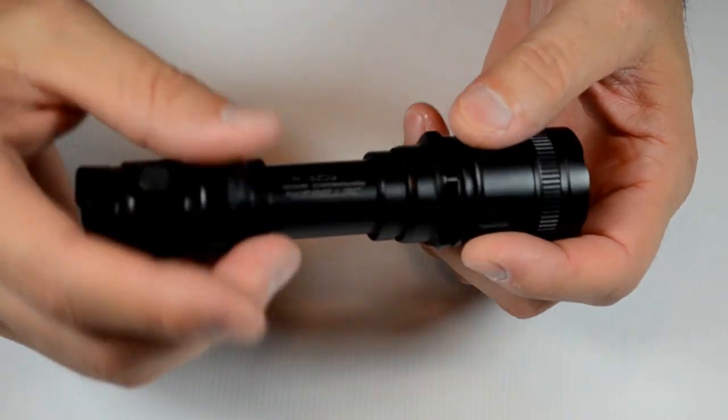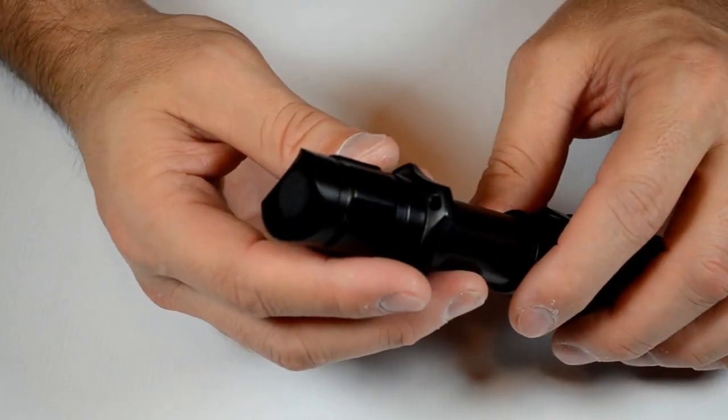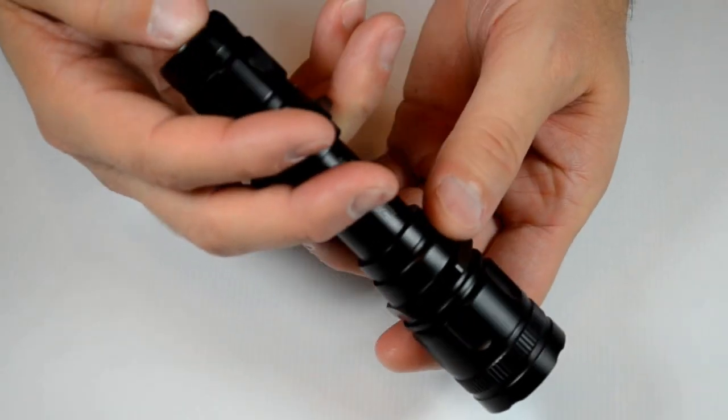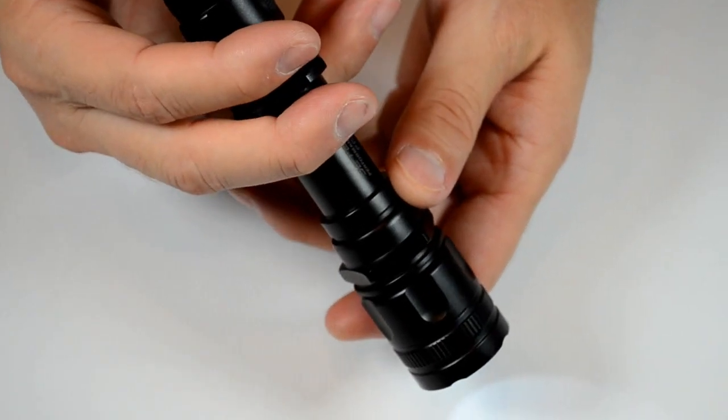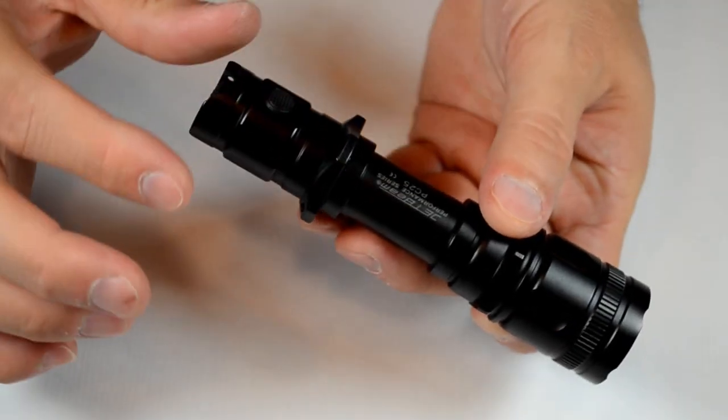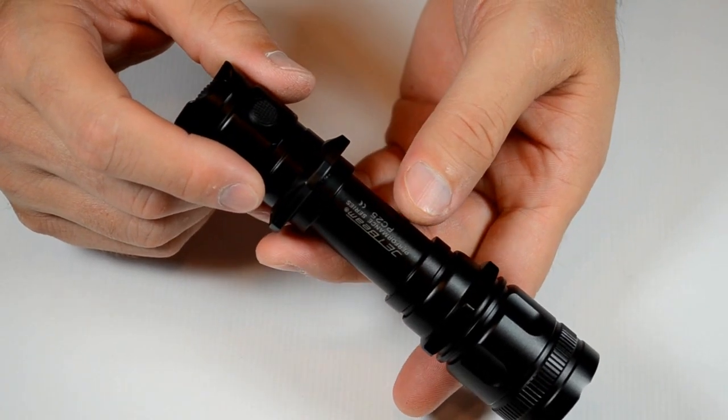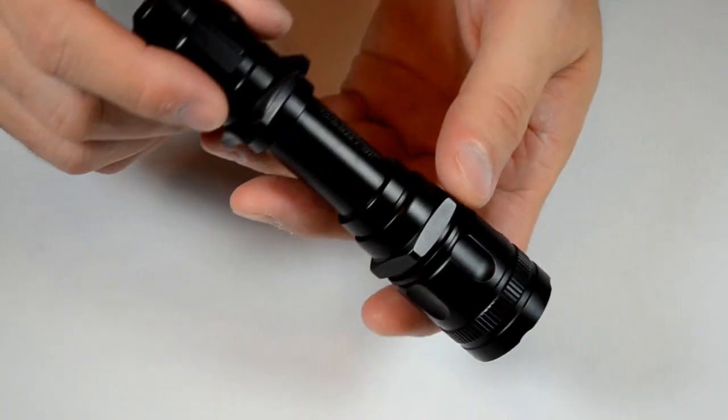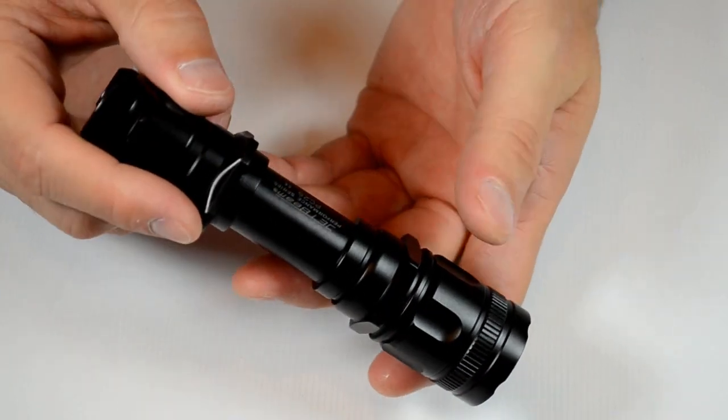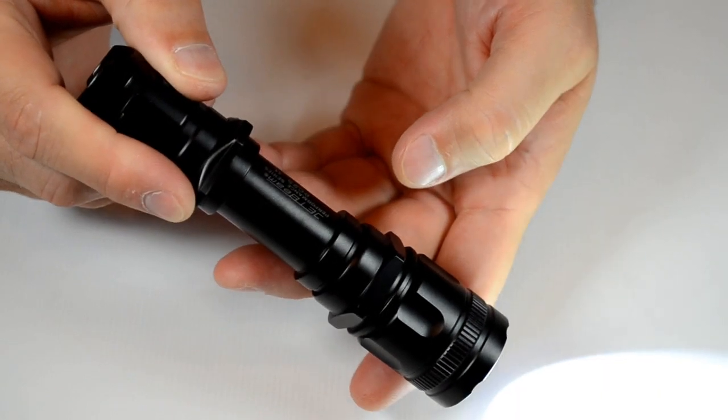It's got the tactical grip, and it's got the forward clicky on it that actually turns on the light. And it's got the side switch that operates the light for changing its output levels. To get to instant strobe, you just hit the side button.